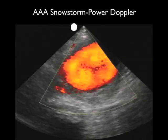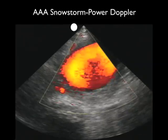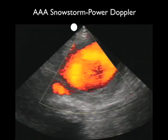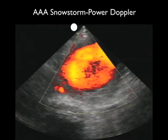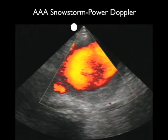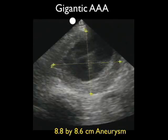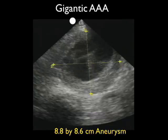Applying color power Doppler confirms this is a vascular structure, and we can see the chaotic flow of blood circulating within this AAA, which contributes to the substantial burden of clot formation. Measuring this gigantic abdominal aortic aneurysm in short axis from outer wall to outer wall, we get a measurement of 8.8 by 8.6 centimeters. This patient went directly to the operating room and had successful placement of a stent.